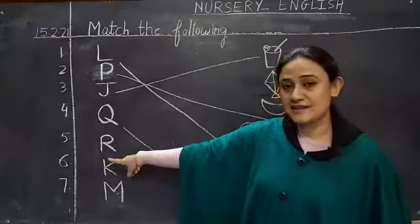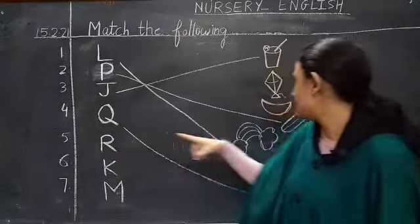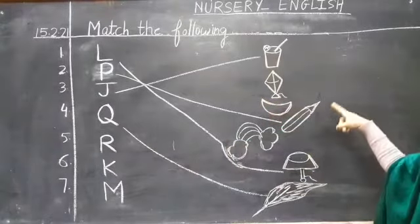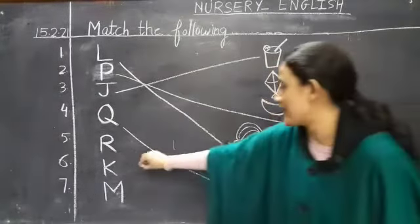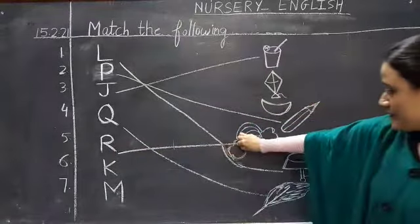Next letter is R. R is for rainbow, so we will match R with the rainbow.